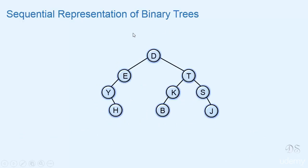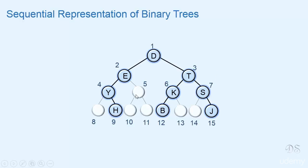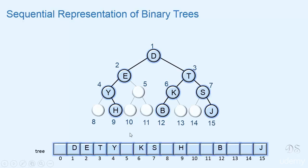Now we'll see how we can represent this binary tree using an array. We consider this binary tree as a complete binary tree with some missing nodes. We provide numbers to all the nodes including the missing nodes. In this array, the locations corresponding to these missing nodes are left empty — so locations 5, 10, 11, and 8 are all empty in this array, and all other nodes are inserted according to their numbers.